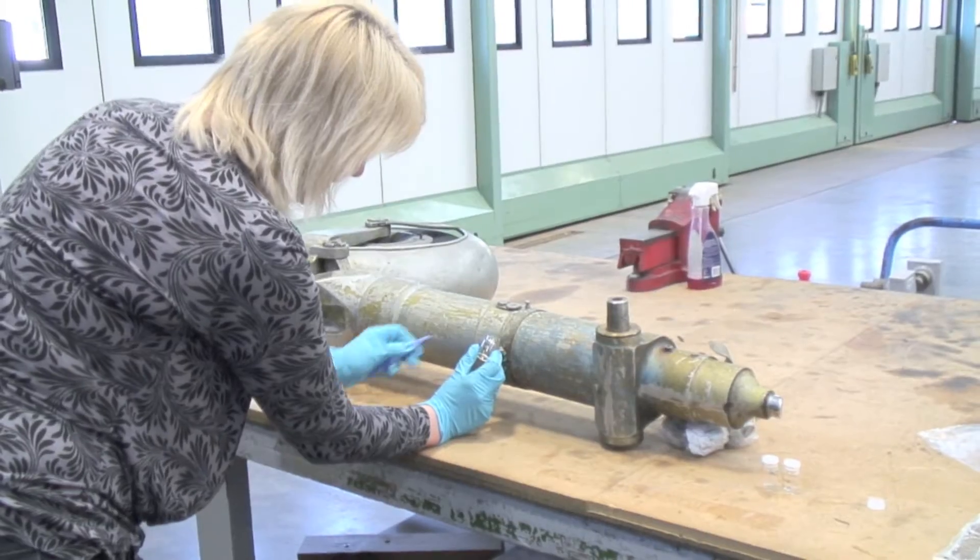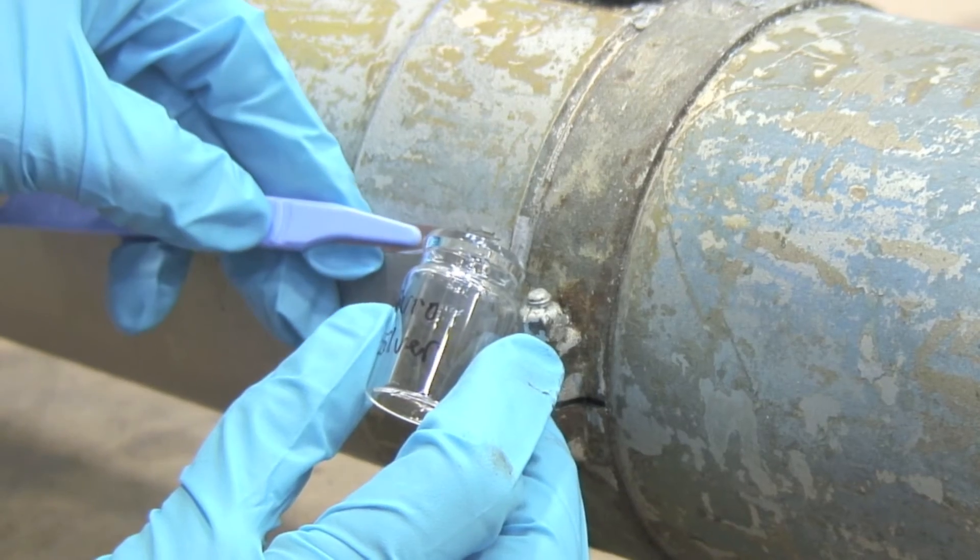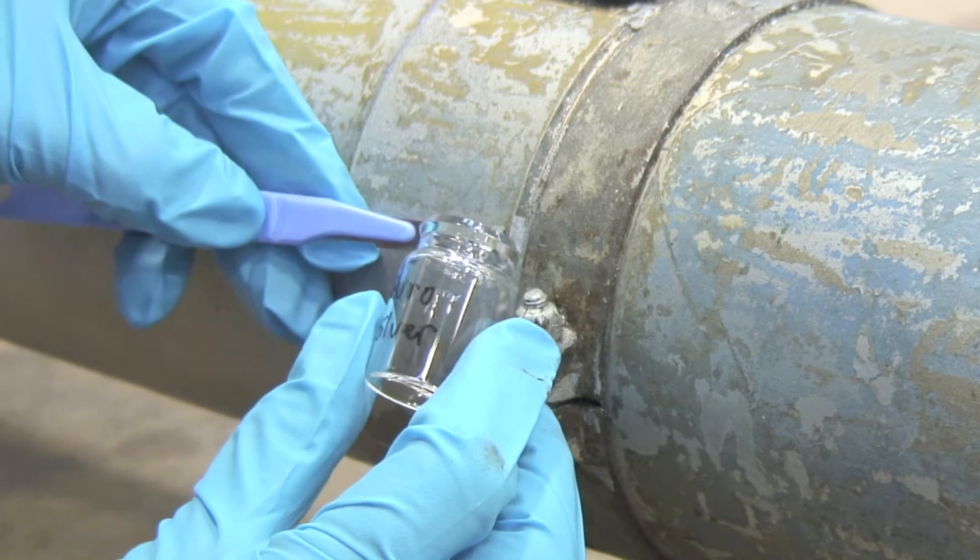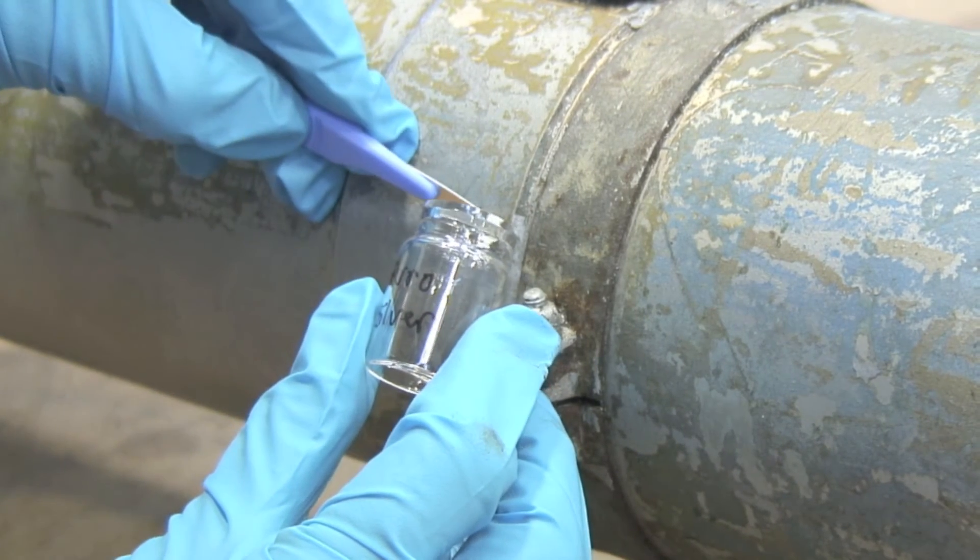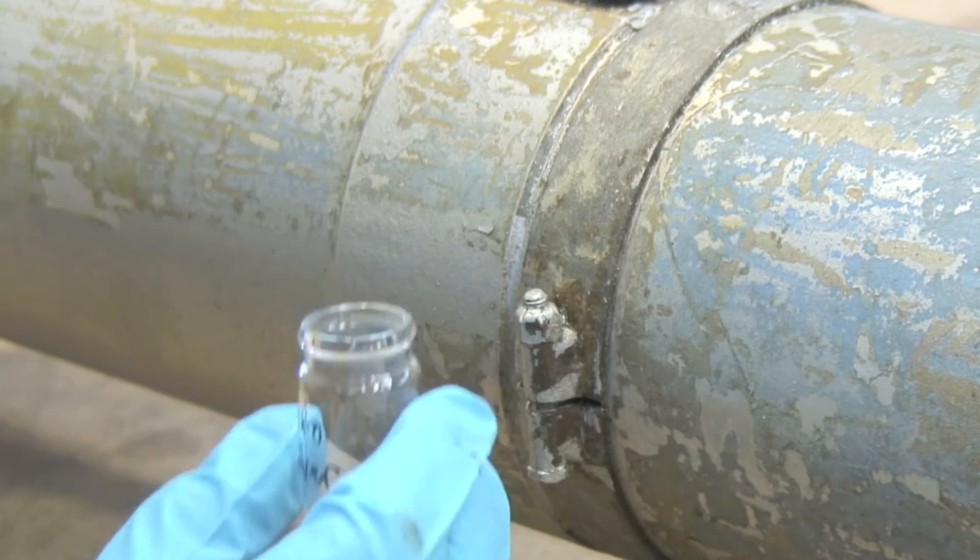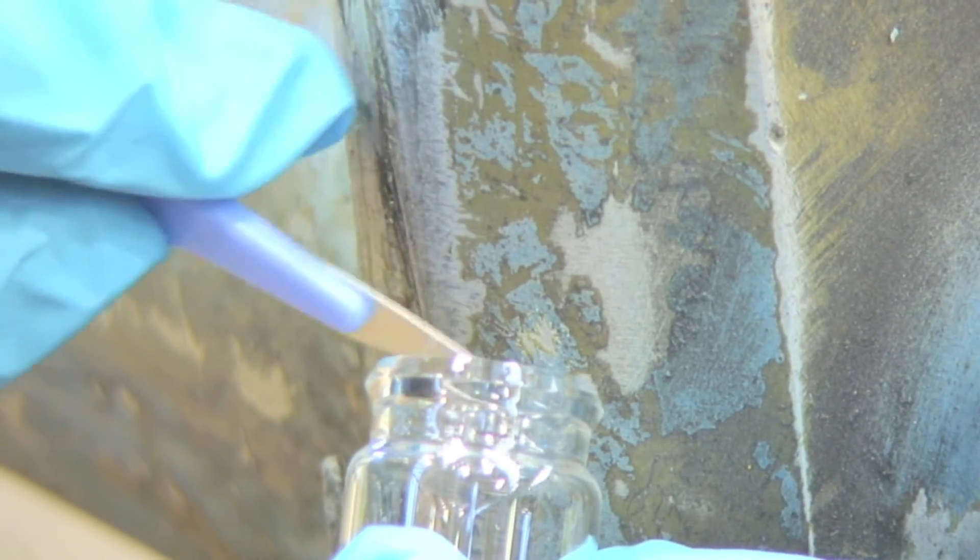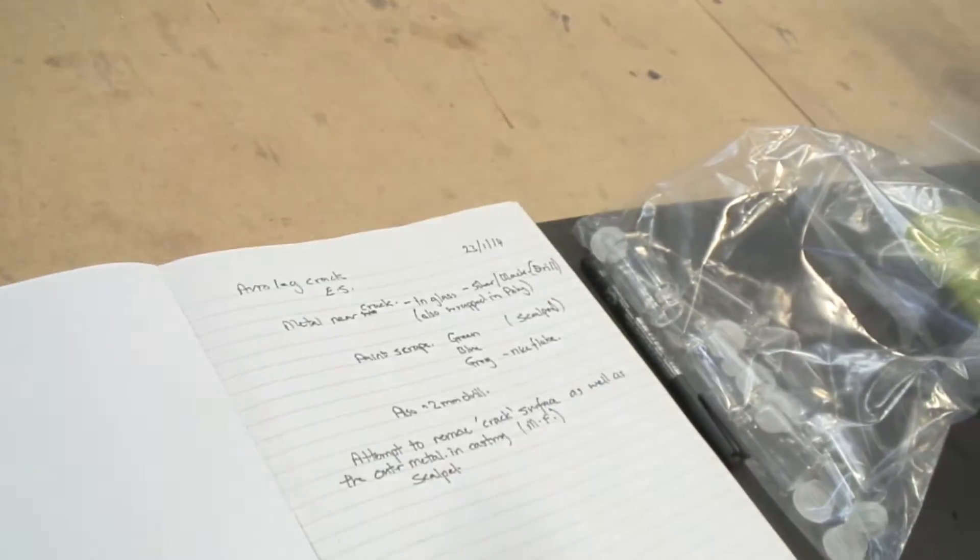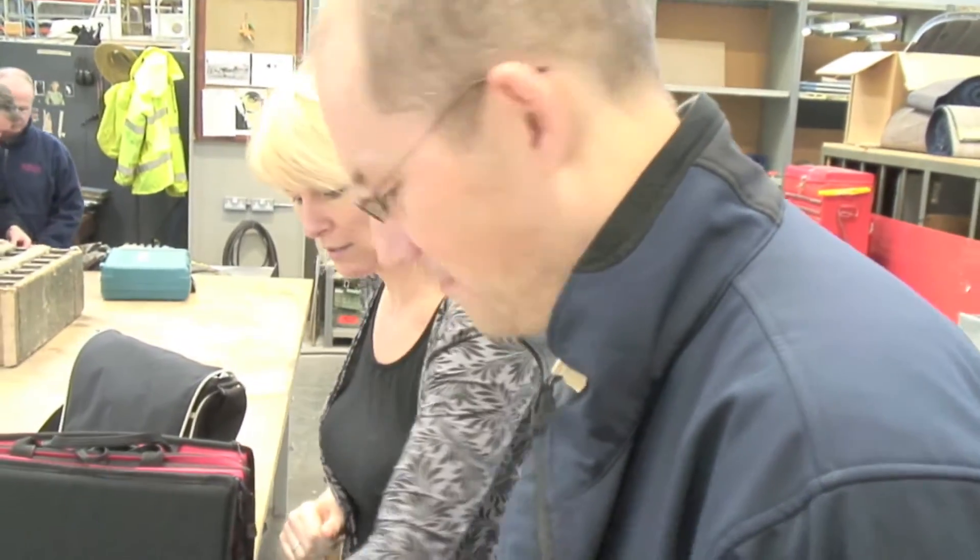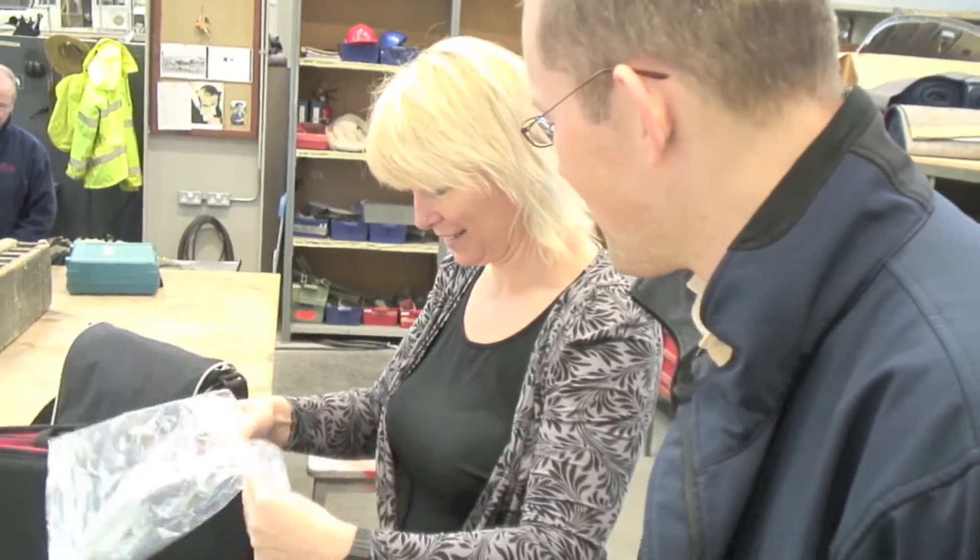As well as taking samples of the alloy, the team now has to sample the different layers of paint. So any contamination from these materials can be discounted from the analysis. They even bag up the drill tip so this can be identified too. Once everything is bagged up, we're ready to find out what our mystery alloy is really made of.